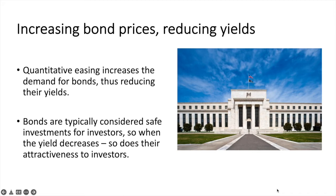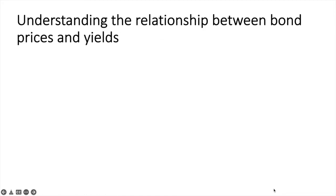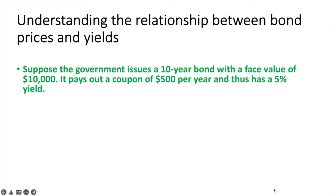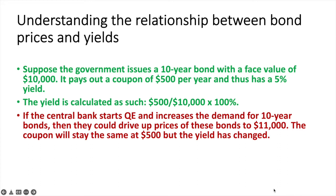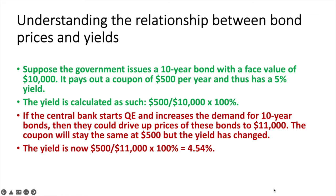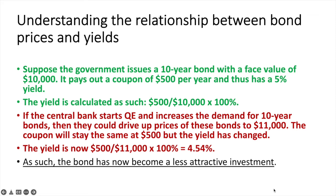Why did bonds become less attractive and how did the yields decrease? Let's see how with an example. Suppose the government issues a 10-year bond with a face value of $10,000. It pays a coupon of $500 per year and thus has a 5% yield. The yield is calculated as $500 divided by $10,000 times 100%. In this case, the coupon is equal to the percentage yield, so the coupon is 5% of $10,000 which equals $500. Now, if the central bank starts QE and increases the demand for 10-year bonds, they could drive up the price of these bonds to $11,000. The coupon will stay the same at $500 but now the yield has changed. The yield is now 500 divided by 11,000 times 100%, which is 4.54%. As such, the bond has become a less attractive investment — it's now returning less than it was before. If you purchase this bond, you're getting 4.54% instead of 5%.